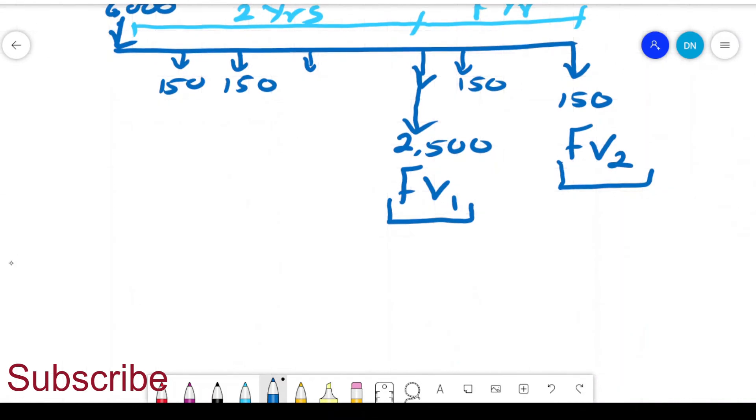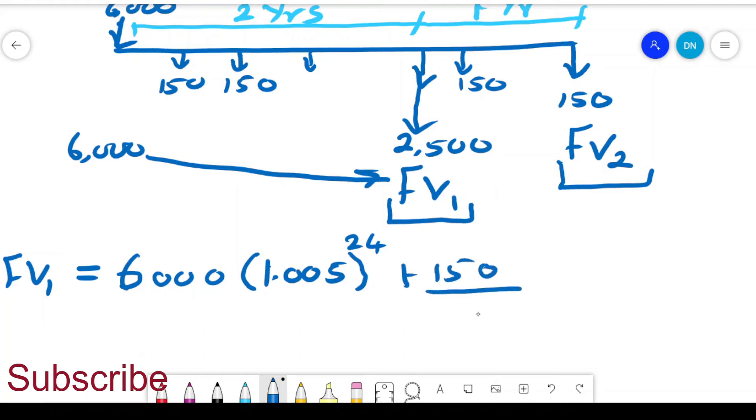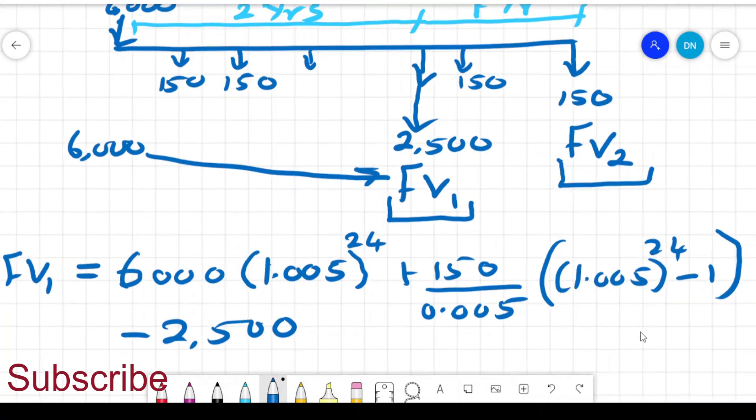The FV1 will be given by the amount that Anne had made, which is $6,000. Because we want this $6,000, we want to bring it to this time period. And then we take the $150 deposits that she was making every month, $24,000 minus 1. And then we subtract the $2,500, so that we know how much money she'll be having in the account at the end of the second year.